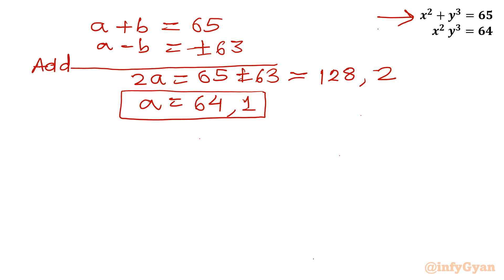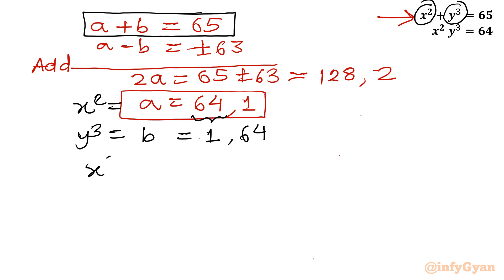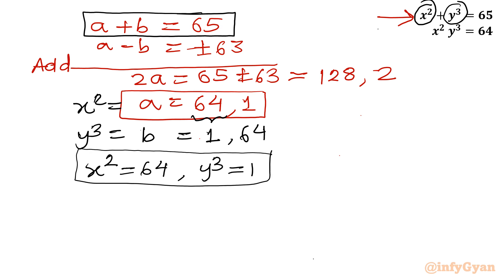From equation a plus b equal to 65: if a is 64, then b equals 1; and if a is 1, then b equals 64. Since a is x squared and b is y cubed, we get: first set — x squared equal to 64 and y cubed equal to 1; second set — x squared equal to 1 and y cubed equal to 64.